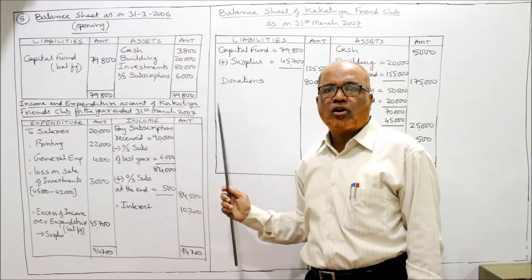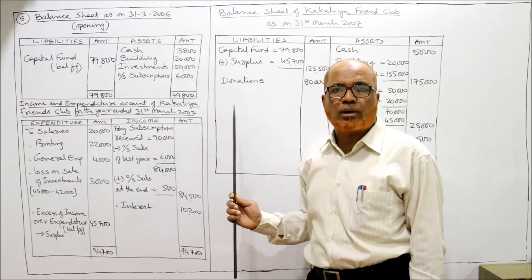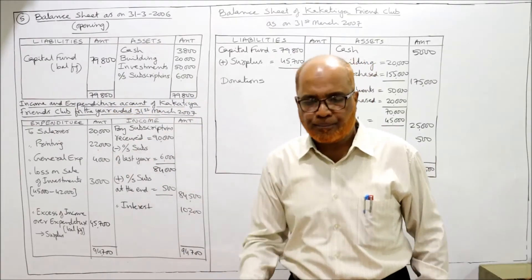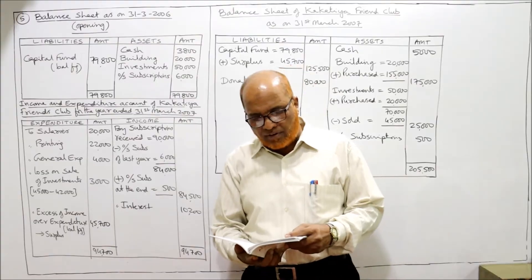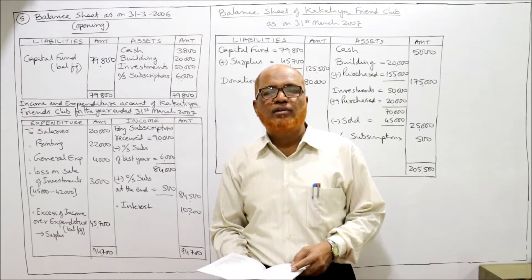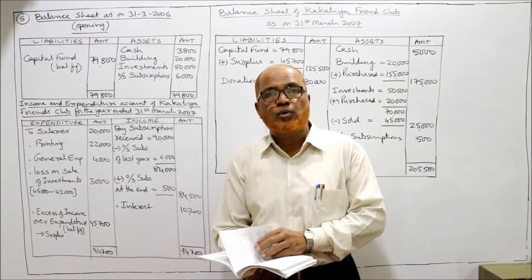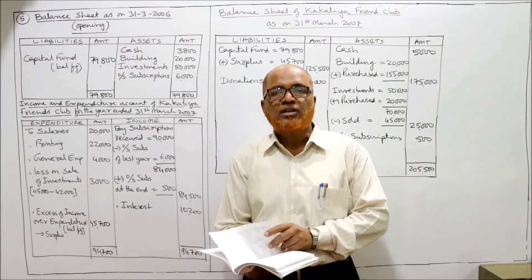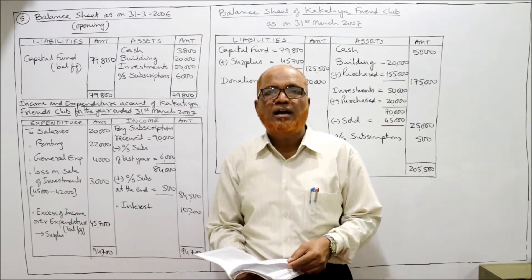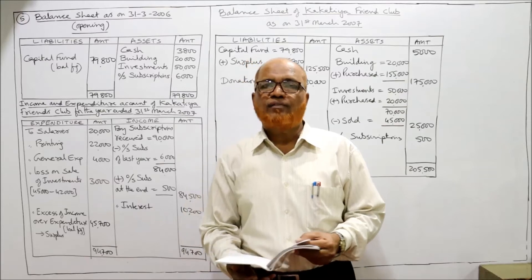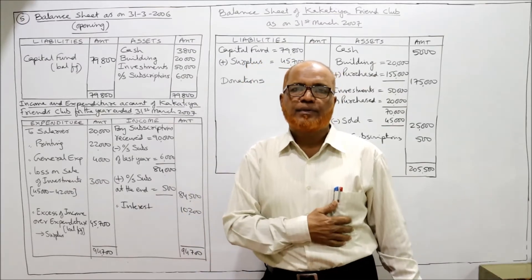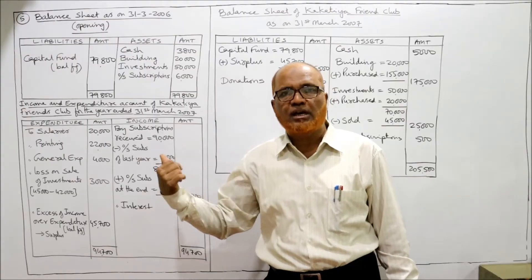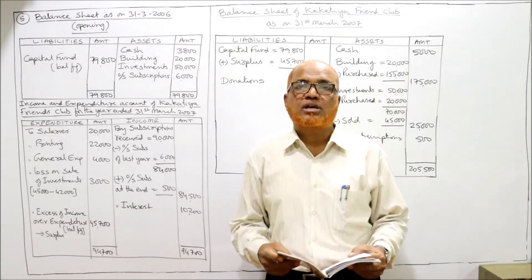Without this capital fund we cannot make the closing balance sheet, so we prepared the opening balance sheet to find it. Now regarding investments: the additional information states the book value of investment sold is 45,000, but the sale proceeds in the receipts and payments account show only 42,000. So there is a loss on sale of investment of 3,000, which will be debited to the income and expenditure account.